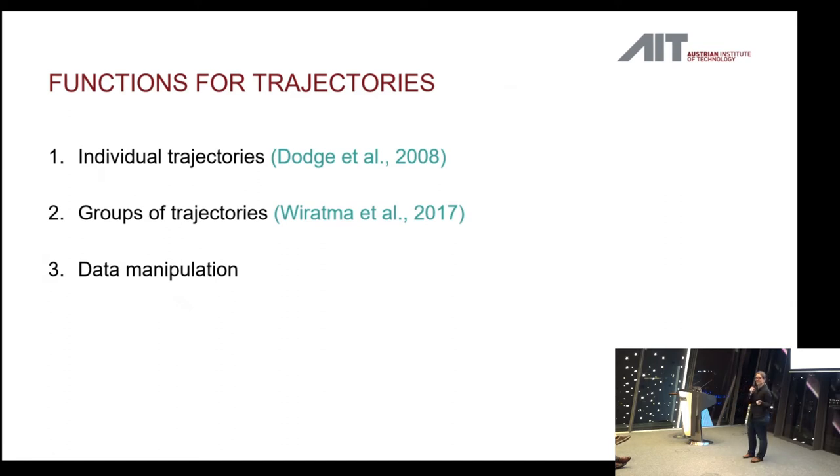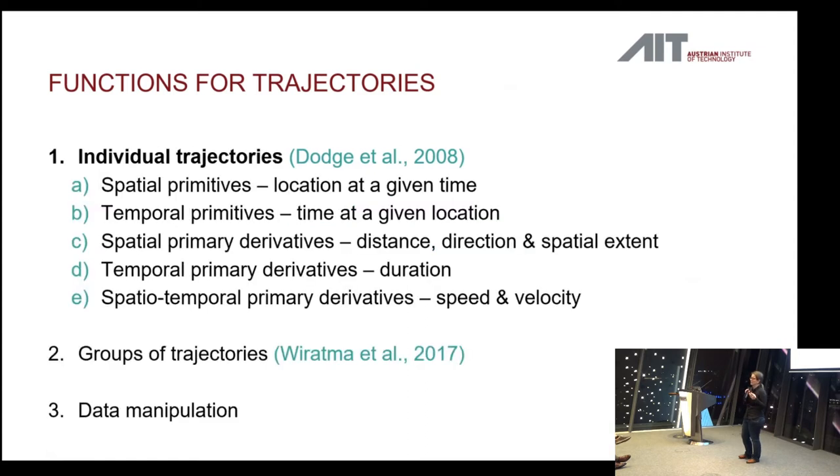So, what kind of explorations do you want to do with movement data? There's a lot of things that you want to do on the individual trajectory, so just looking at one object that is moving at a time. Then there's tons of functions that you can do on groups of trajectories or between different groups. And then there's, of course, a lot of functionality that is just data manipulation, but that is necessary to get where you want to go. So, the most obvious thing is, for example, spatial primitives. You want to find the location at a certain time. Or the other way around, you want to find the time given a location. So, you want to know at which point in time did that object arrive at this location. Then there's things like distance and speed that you want to calculate. And, of course, also things like velocity, so angular velocity, how quickly something changes direction.